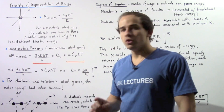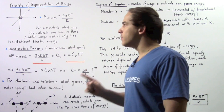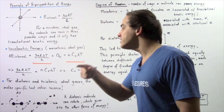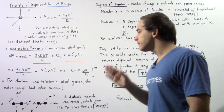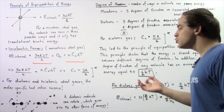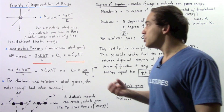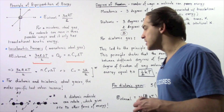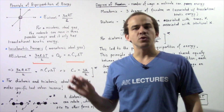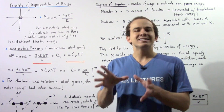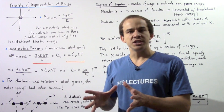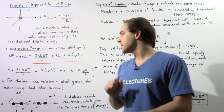A diatomic molecule not only is capable of translating along the X, Y, and Z axes, but it also rotates about three different axes, giving rise to rotational kinetic energy. We focus on only two of these rotations because the third rotation has a very small moment of inertia, so the energy associated with it is negligible.